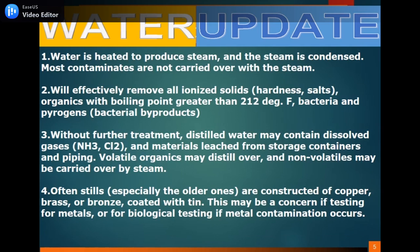In distillation, water is heated to produce steam and the steam is condensed. Most contaminants are not carried over with the steam. This will effectively remove all ionized solids, hardness salts, organics with a boiling point greater than 212 degrees Fahrenheit, bacteria, and pyrogens. Without further treatment, distilled water may still contain dissolved gases, ammonia, chlorine, and materials leached from storage containers and piping. Volatile organics may distill over and non-volatiles may be carried over by steam.